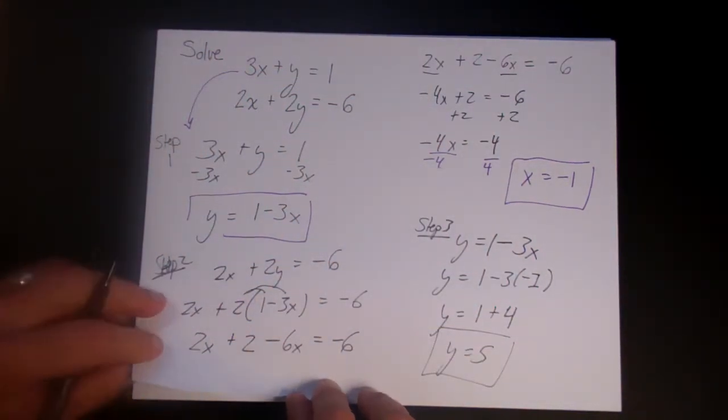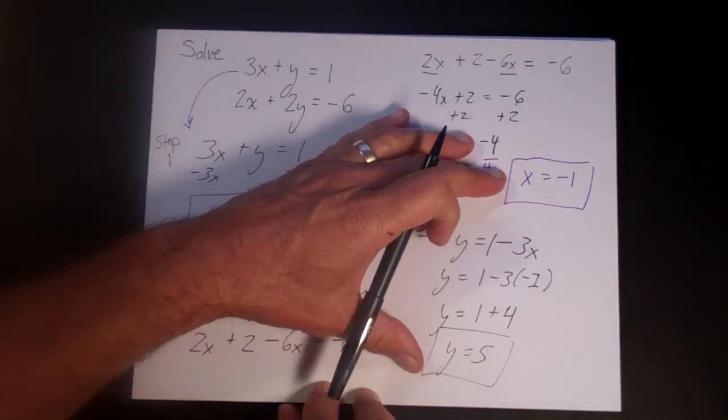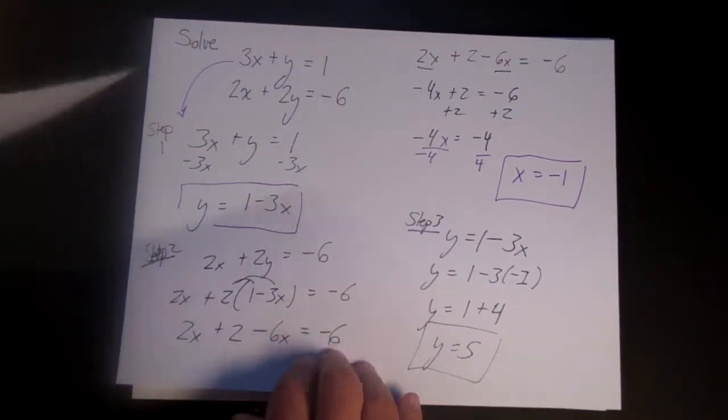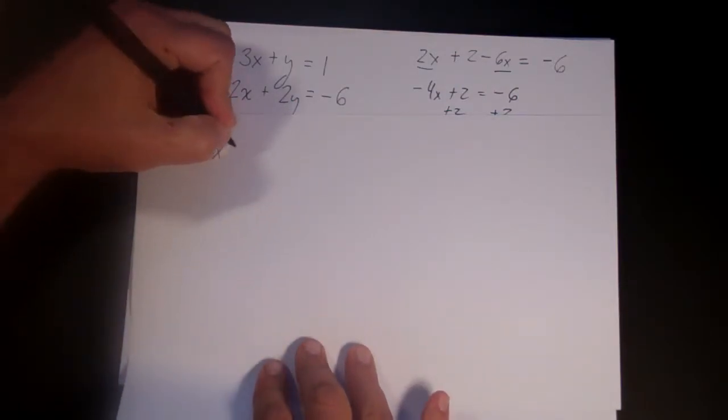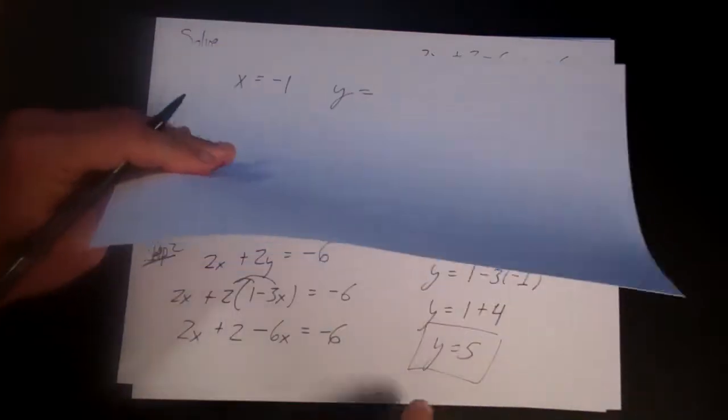As long as we didn't make a mistake. So the question is then how do we check it? Well the way we check it is we take these two answers, x is equal to minus 1, y is equal to 5, and let's plug it into the original equation. So typically the way we write this is x is equal to minus 1, y is equal to 5.